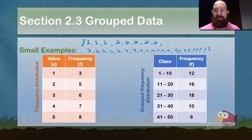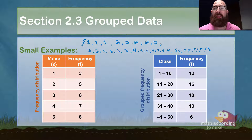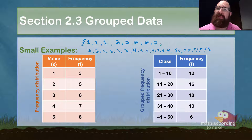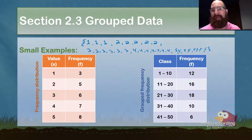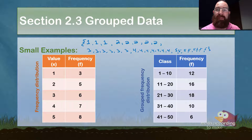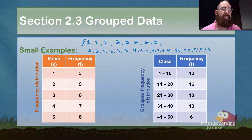In the second one, the grouped frequency distribution, notice we have classes: 1 through 10, 11 through 20, 21 through 30, and so on. All we know is that there are 12 items that are 1 through 10, 16 items that are 11 through 20, and so on. The problem is we don't know exactly what the items are, so we lose some information by putting them in classes. At best, when we go to find our standard deviation and mean, it's a guess — it could be exactly right or off by a little bit.